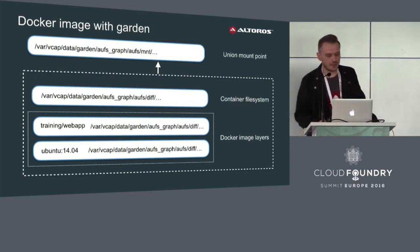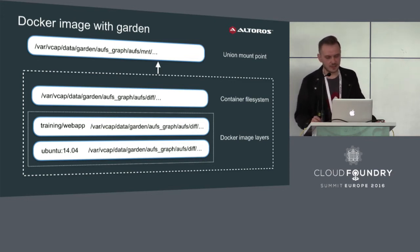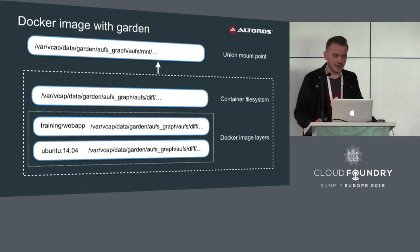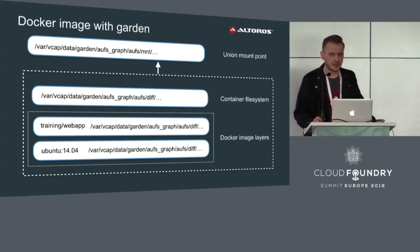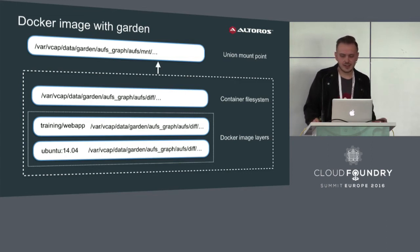In order to run a Docker image, Garden uses libraries from Docker — which is also implemented in Go programming language, so it's quite easy. The contents of the container exactly match the contents of the associated Docker image.